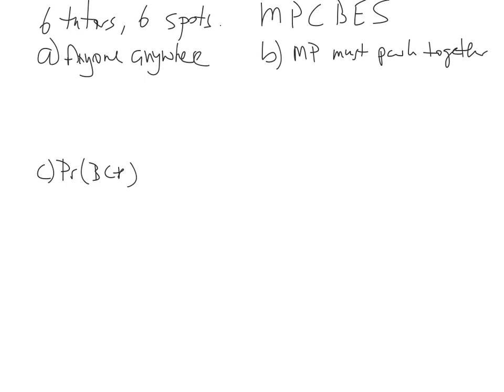Okay, for our next question, it talks about tutors and car spots and also starts asking how many arrangements or combinations we can have. Now, the nature of the question tells us that we've got six tutors and there's six car spots. The tutors are methods, physics, chemistry, biology, English and specialist maths. Four pretty good subjects there and two kind of average ones.